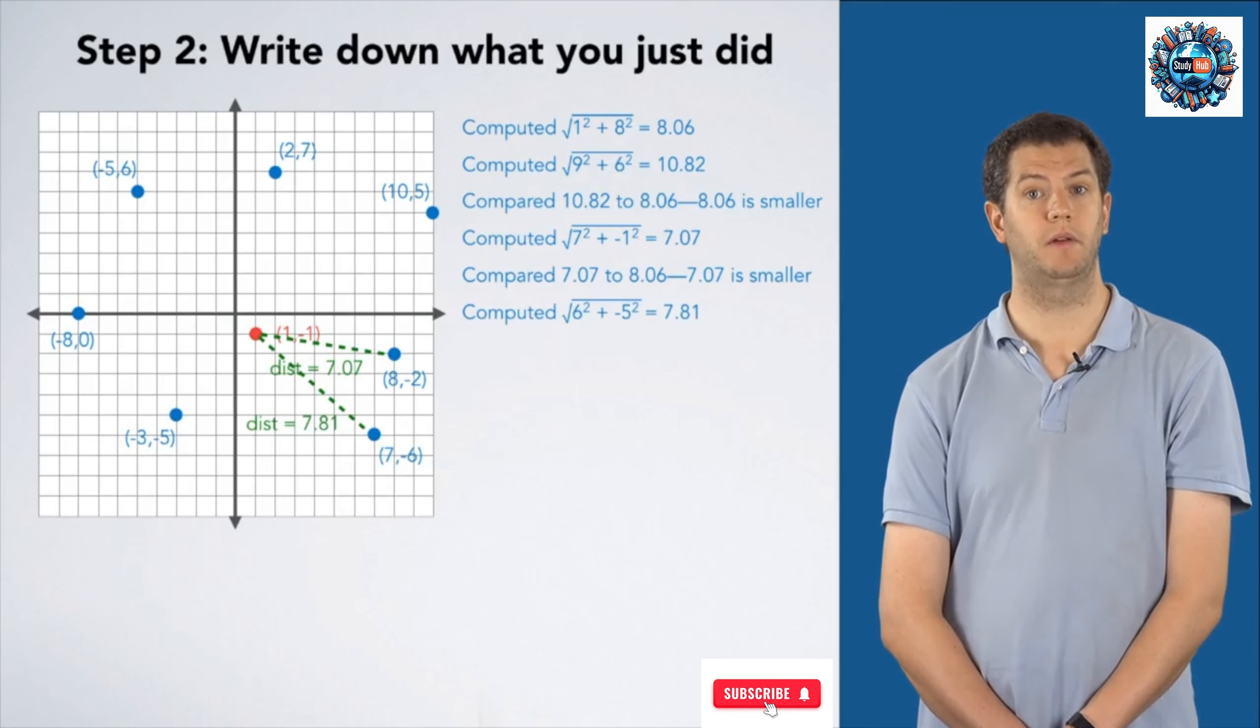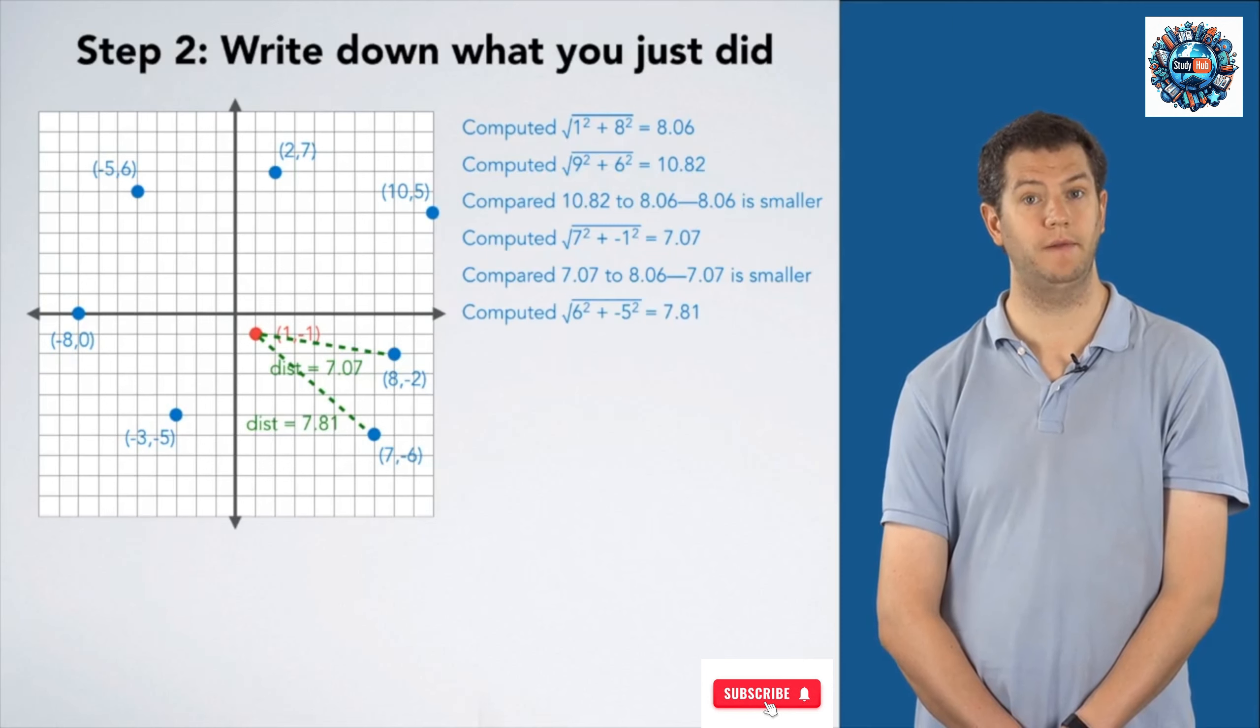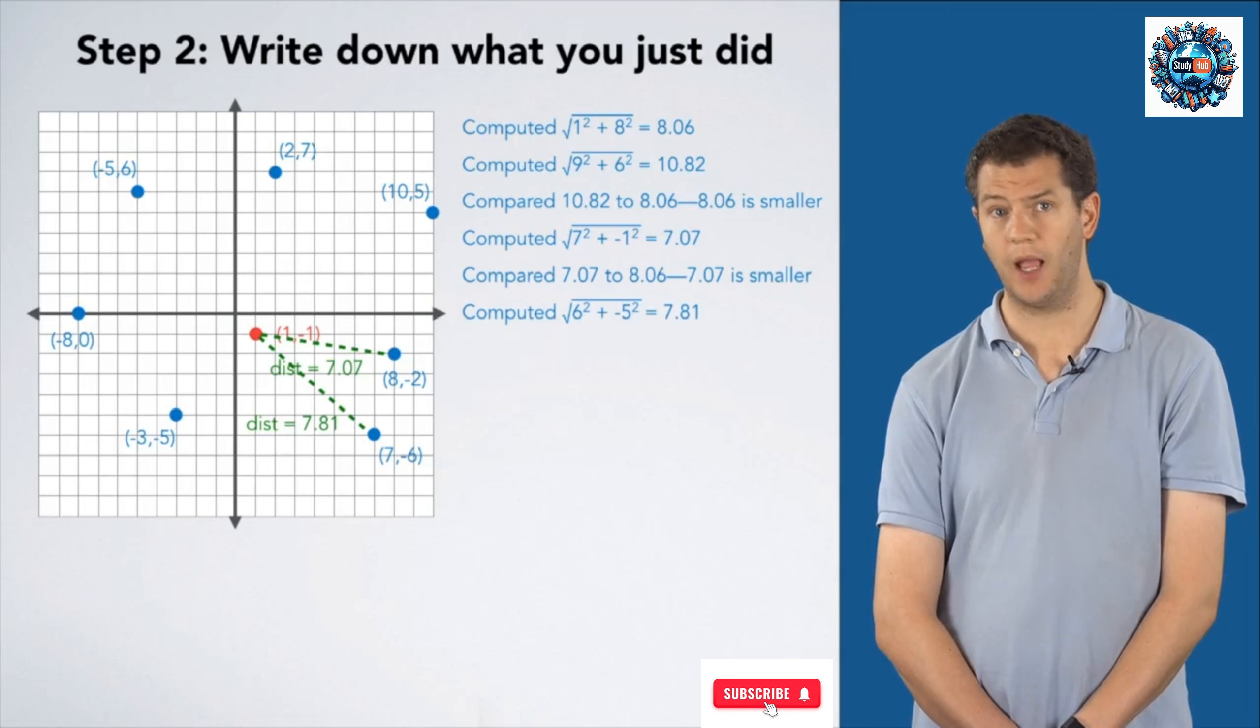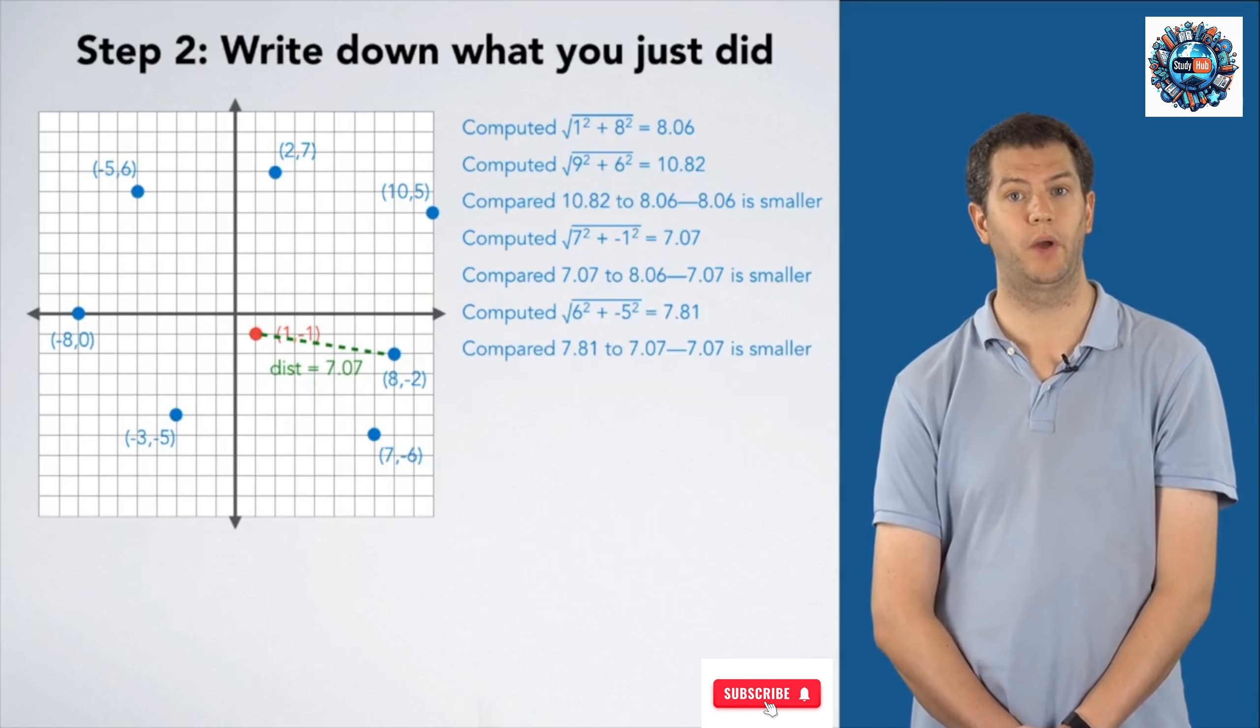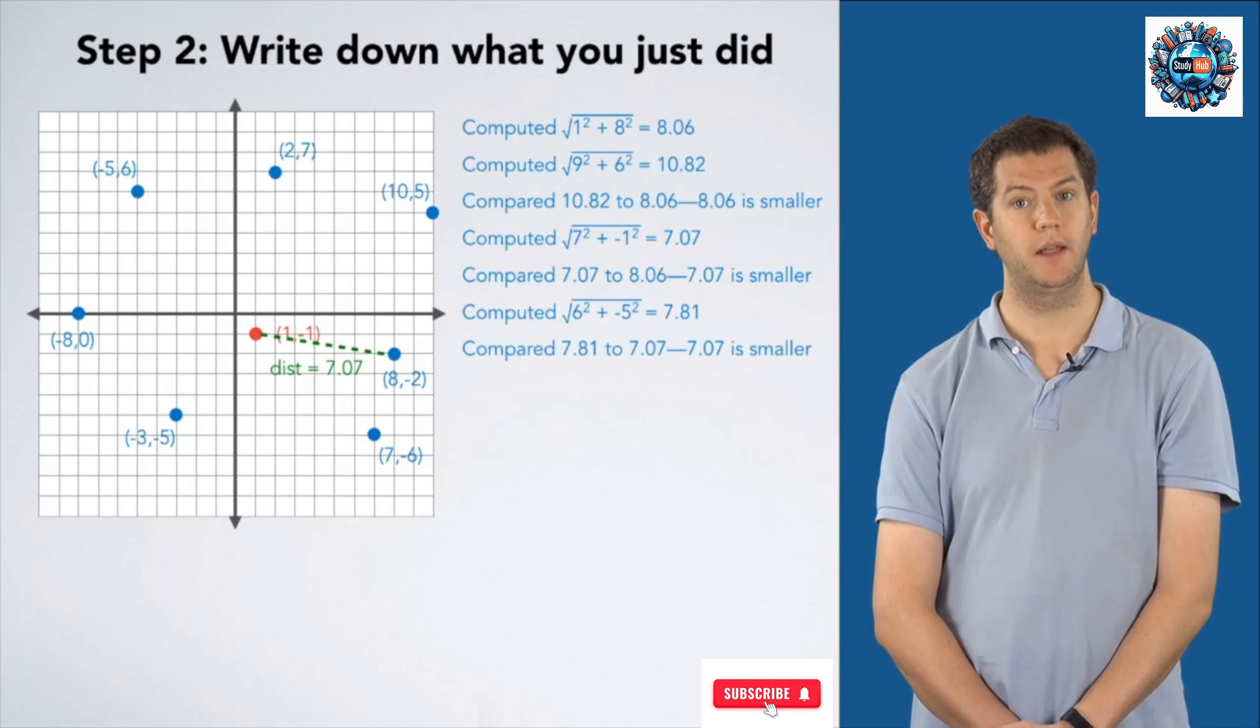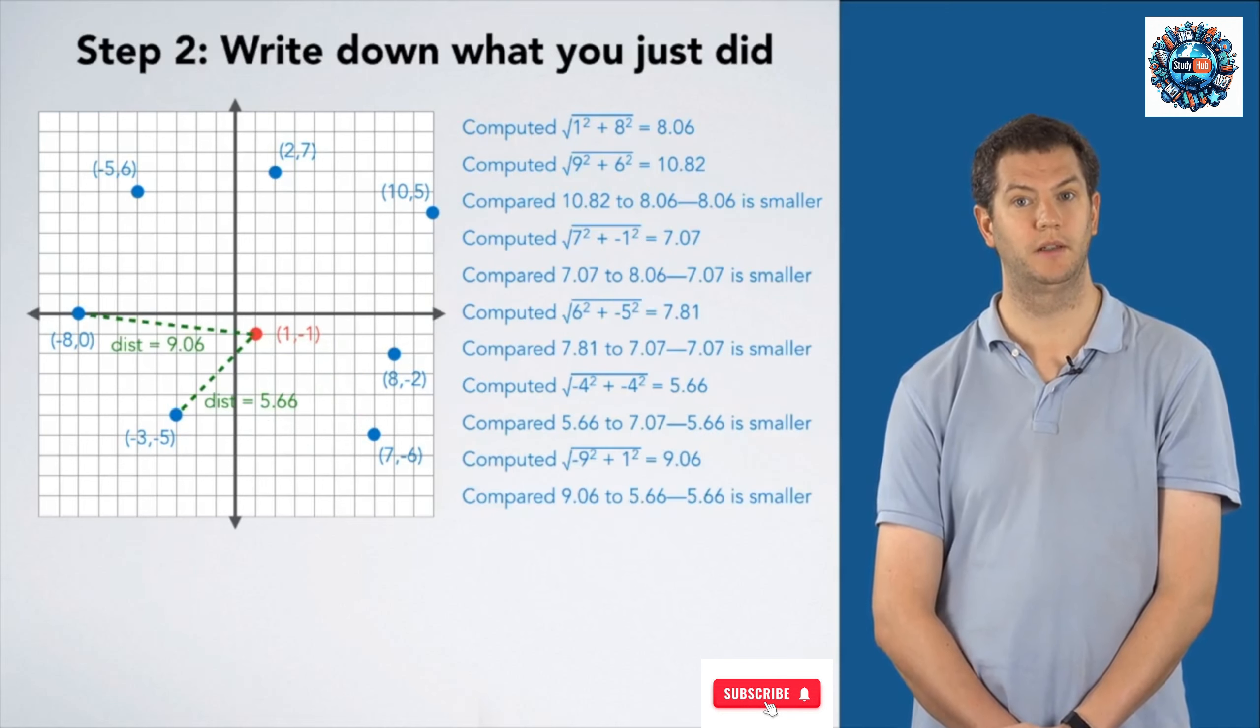Then, I compared the square root of 6² + (-5)², and got 7.81. I compared 7.81 with 7.07, and got that 7.07 was smaller, and so on, and so on, and so on.